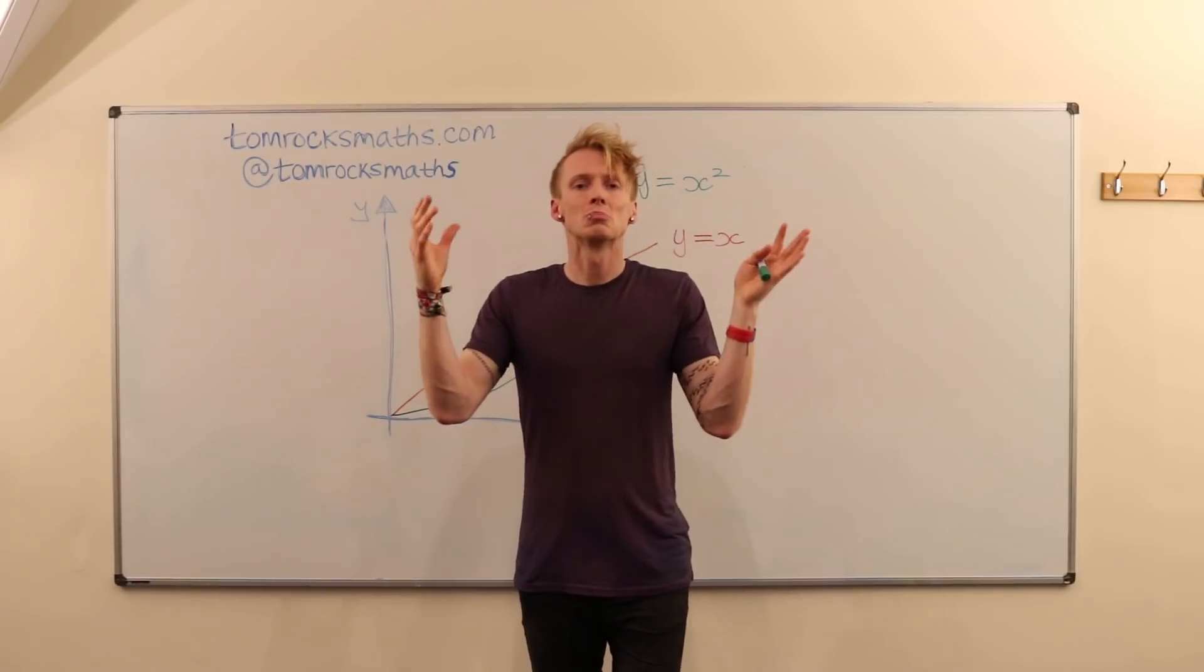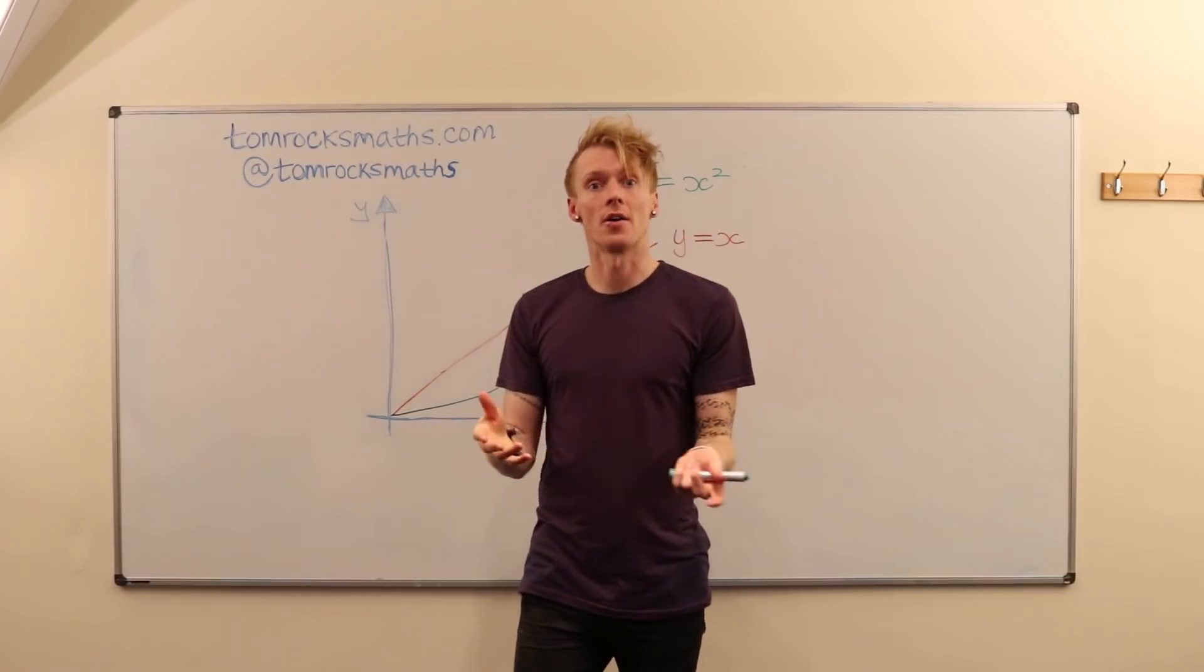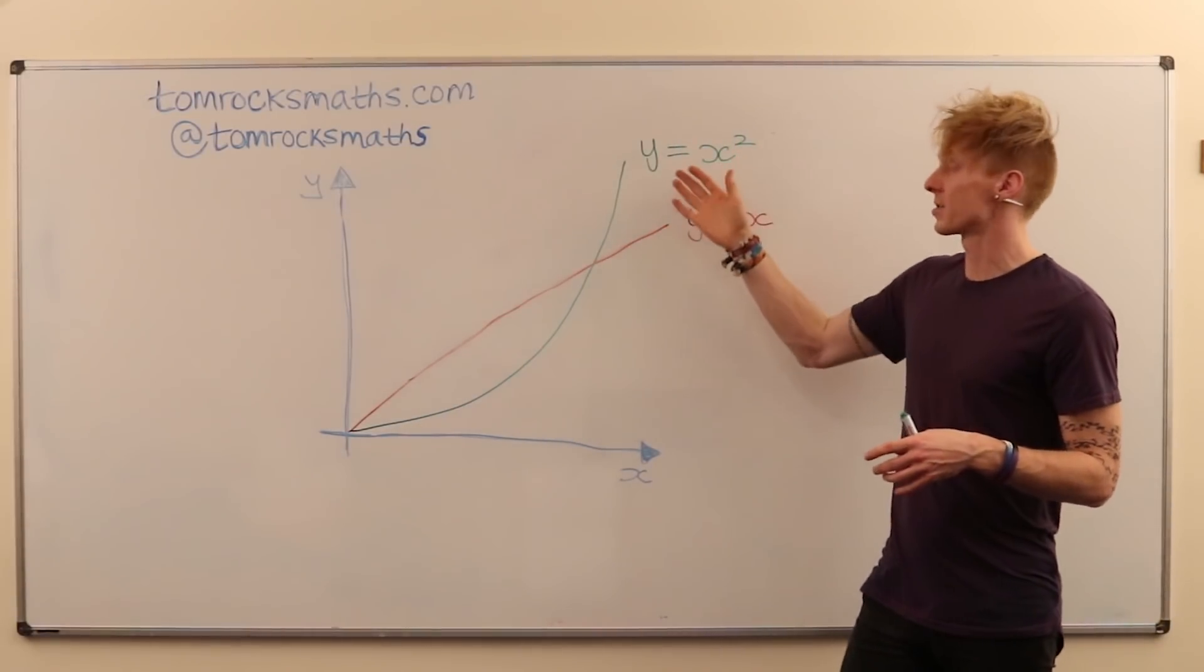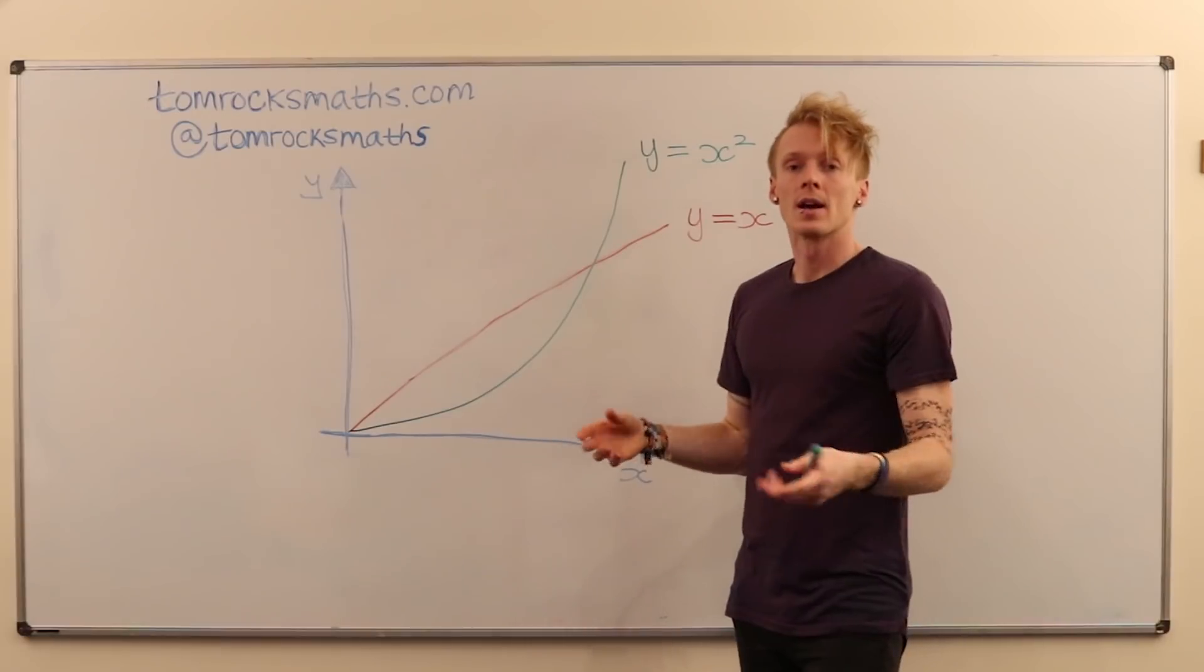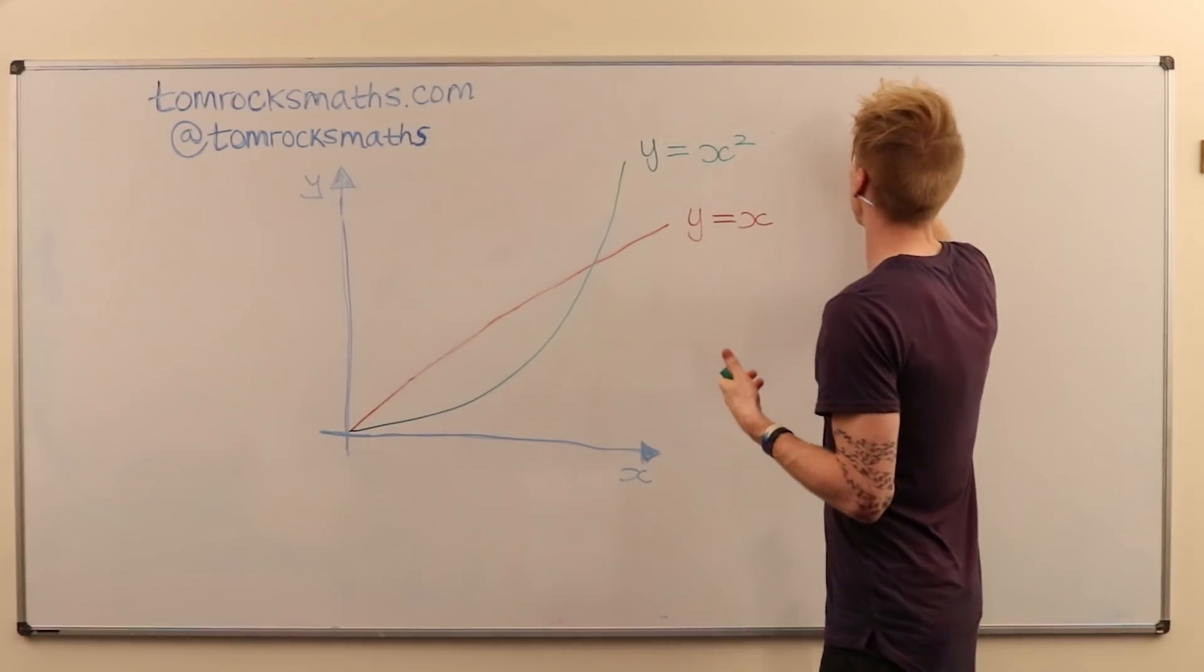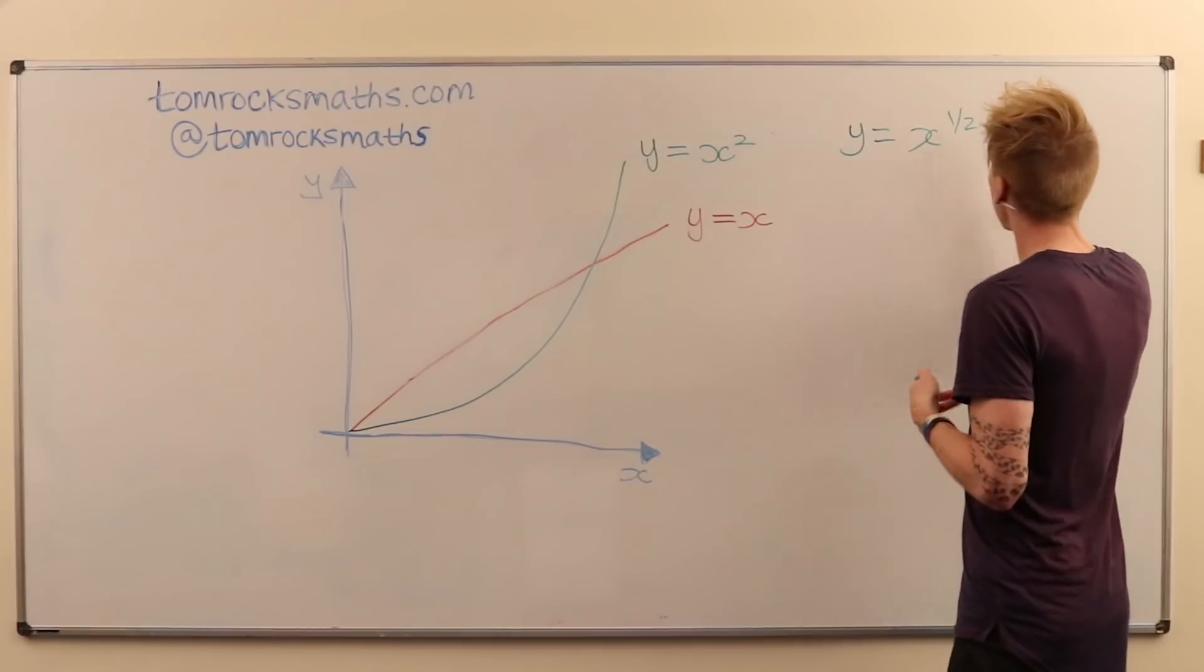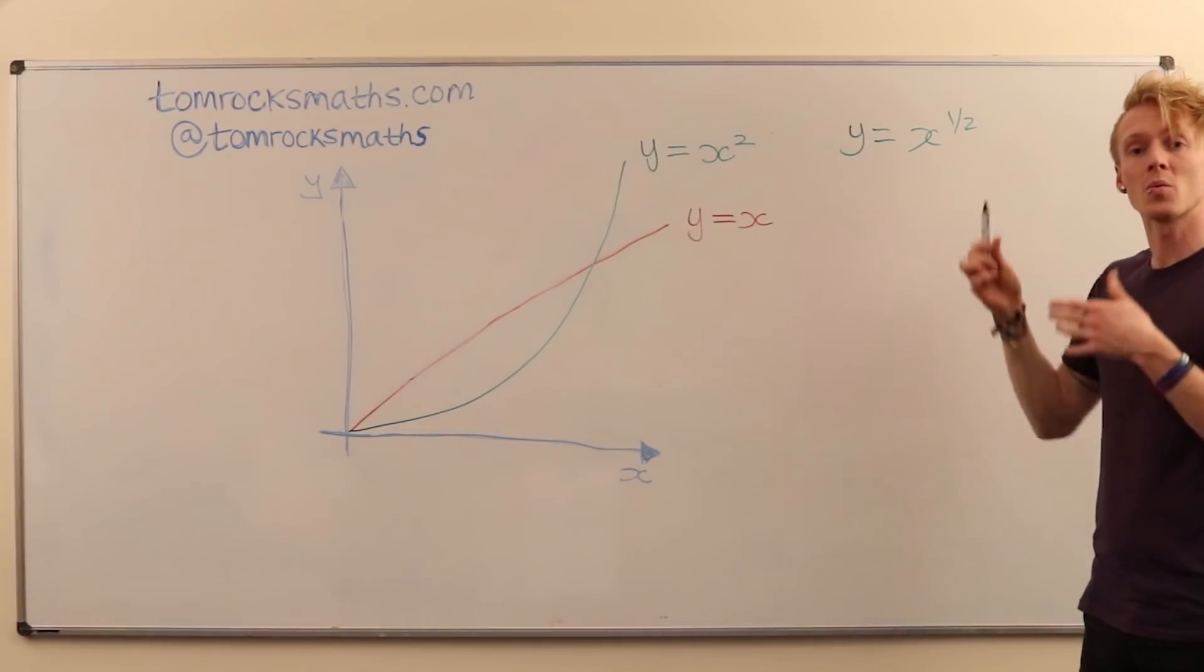So here we have y equals x drawn in red and y equals x squared here in green. And we want to now draw y equals x to the half. So we have an equation.